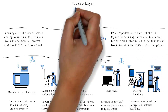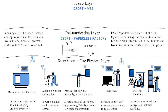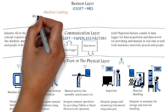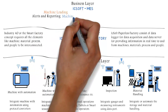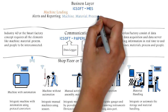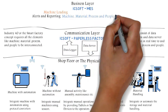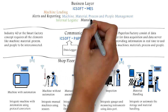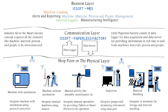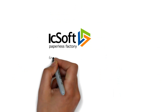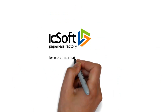ICSoft MES is the business layer, consisting of machine loading, alerts and reporting, machine, material, process and people management, internal logistics, manufacturing intelligence and ERP interface.